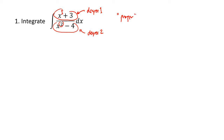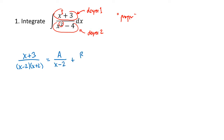Because the degree of the bottom is greater than the degree of the top, this is what we call a proper fraction — just like in elementary school, a proper fraction has a bigger denominator than numerator. So we can proceed to factor the bottom. x squared minus 4 is a difference of two squares: x minus 2 times x plus 2. The partial fractions process tells us we can write this as a over x minus 2 plus b over x plus 2, where a and b are constants.